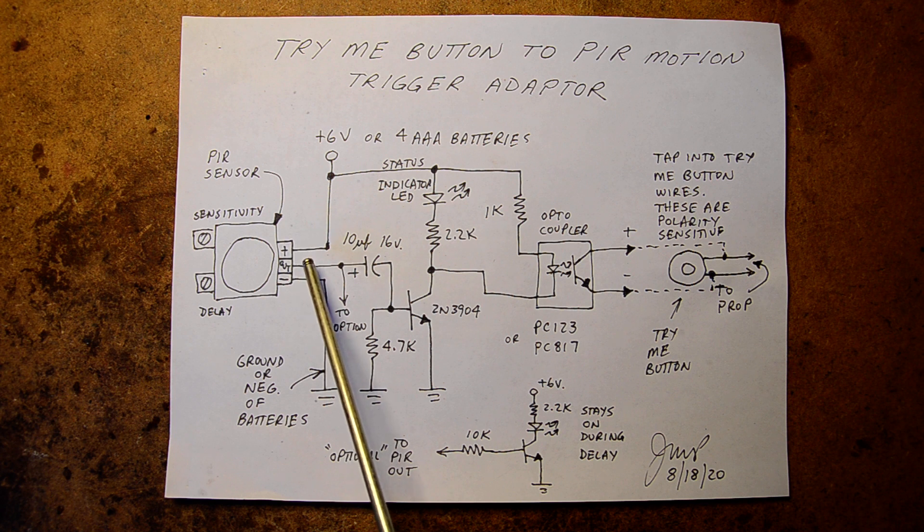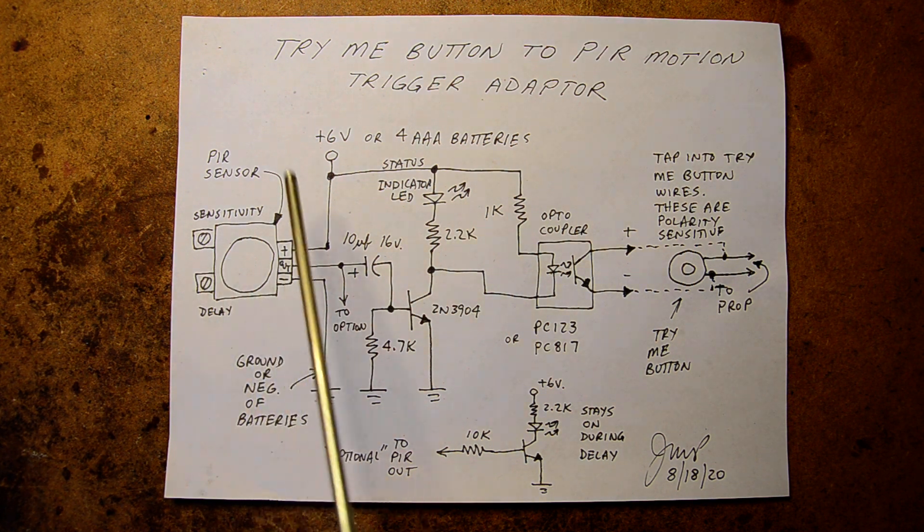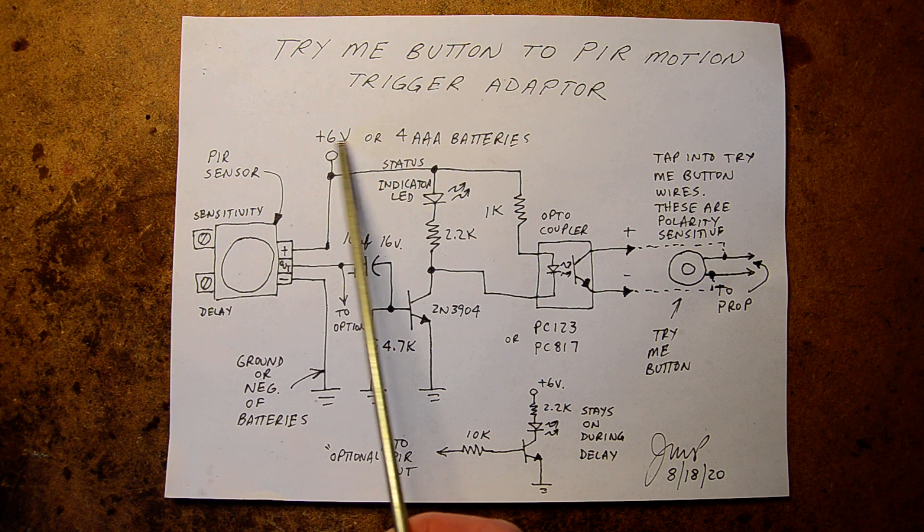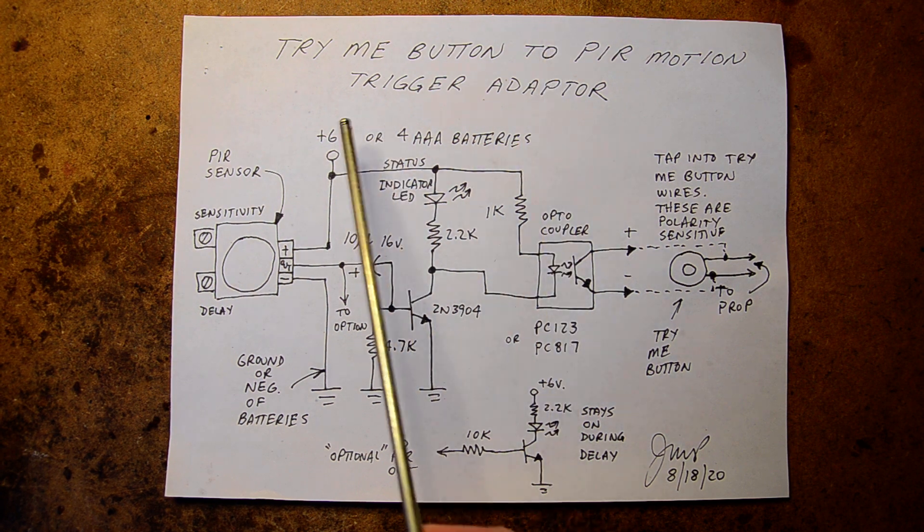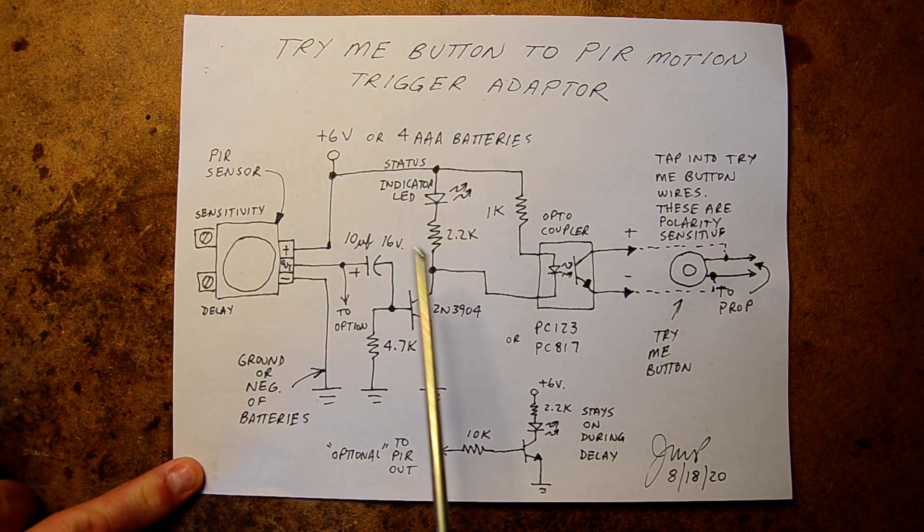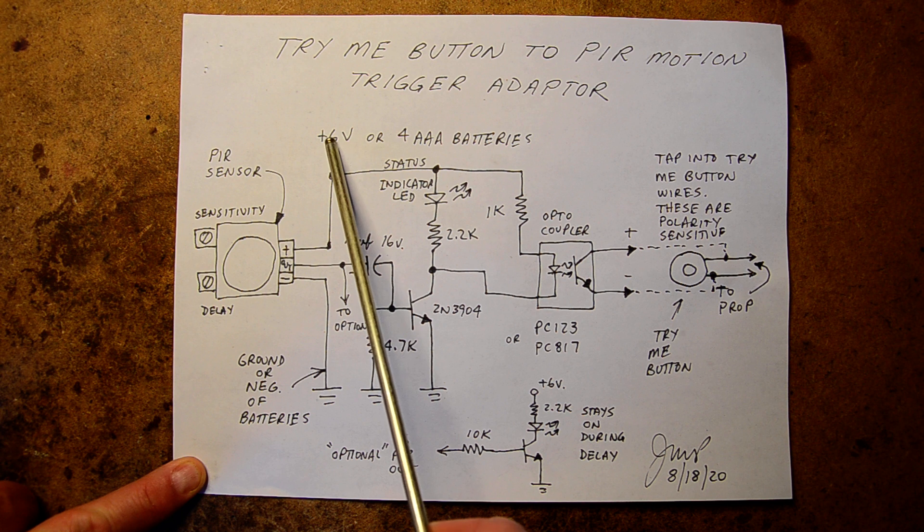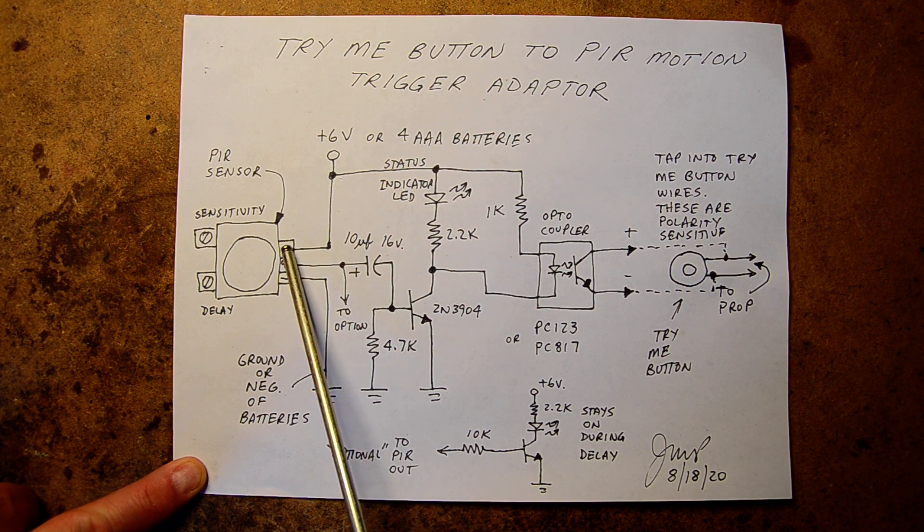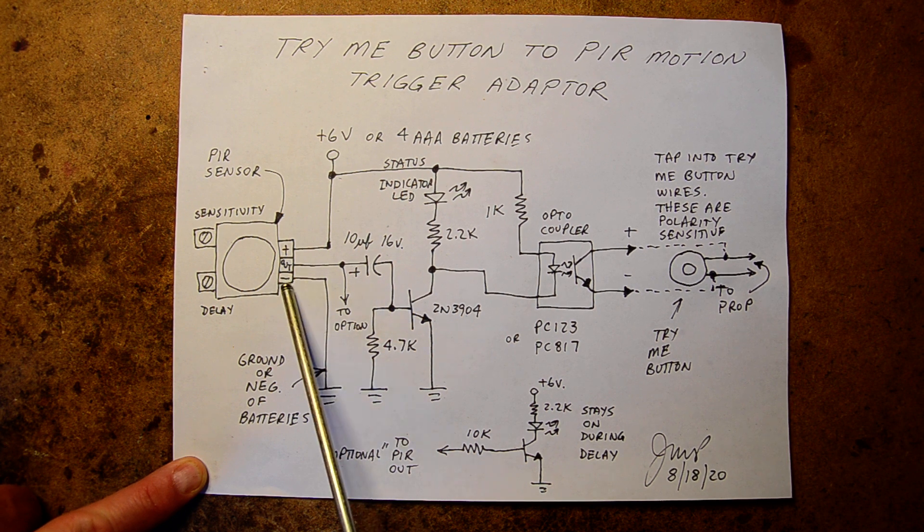What I'm doing is I'm providing six volts either with a wall wart or four AAA batteries. I like using wall warts because I don't want to have to worry about running around for batteries. Basically, I connect the plus six volts to the plus pin and ground or negative of the batteries or wall wart to the negative pin.